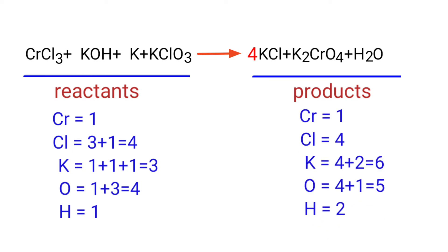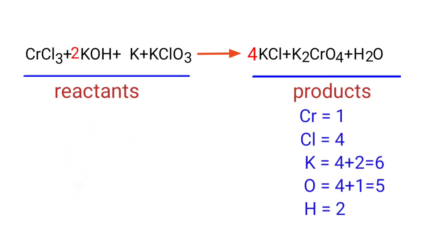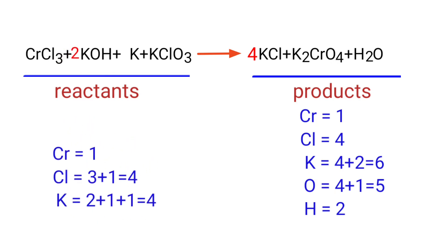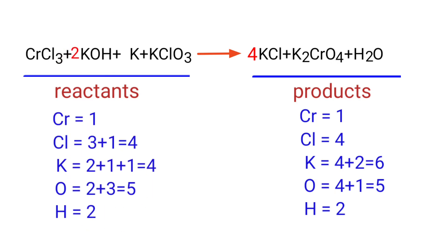Now we need to balance the oxygen atoms. To do this, we need to put a coefficient of two in front of KOH. The oxygen and hydrogen atoms are now balanced.